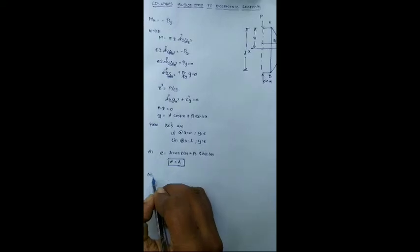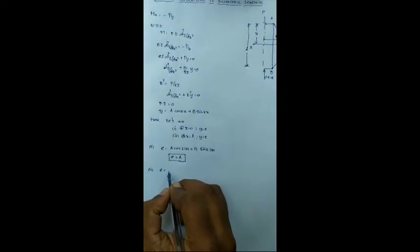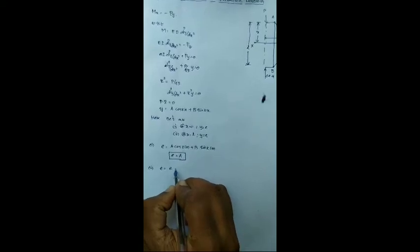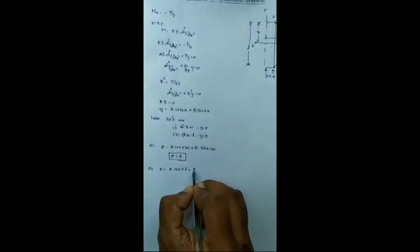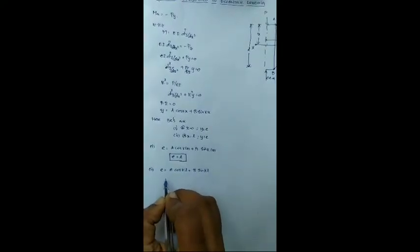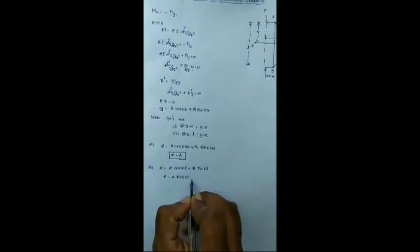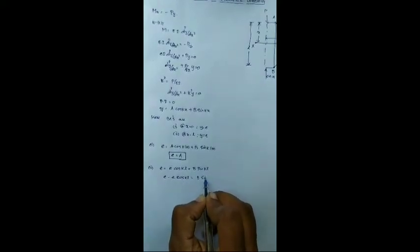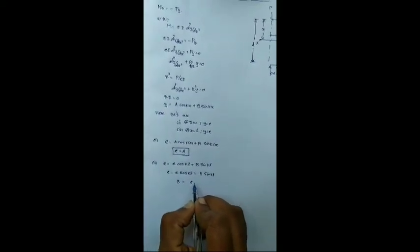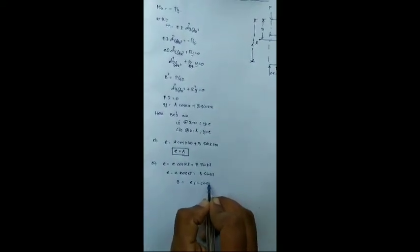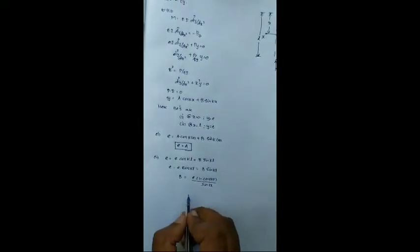Applying the second condition, we get e is equal to, again A will become e, e cos kL plus b sin kL. So simplifying, we will get the value of constant B, that is b equal to e times 1 minus cos kL by sin kL.